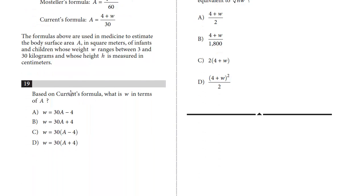Based on Current's formula, what is W in terms of A? We've seen this question before. W in terms of A means we isolate or solve for W, and we're only dealing with Current's formula. So I'll just copy the formula here. We have A equals 4 plus W over 30. We just want to isolate W.